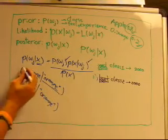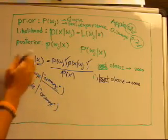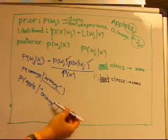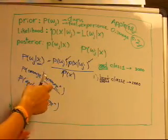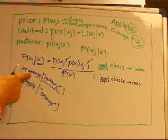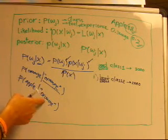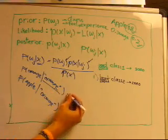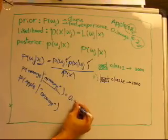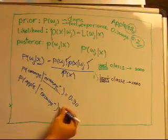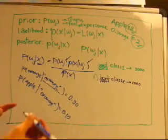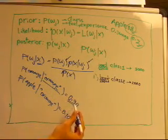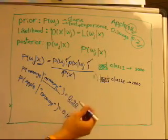And this is P of apple given the color is orange. Then we can compare these two. Given that the color is orange, what is the probability that the fruit is orange? And given the same thing, what is the probability that the apple has the color orange? Maybe this one is 0.9, but this one is going to be only 0.1, something like this. So if we know the color, then we would guess there's more chance for the fruit to be the orange than the apple.